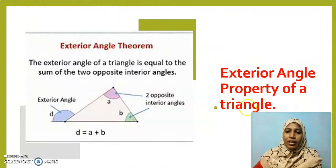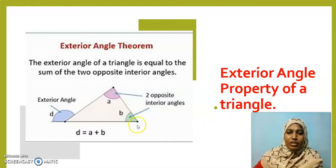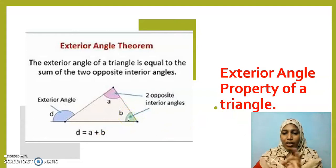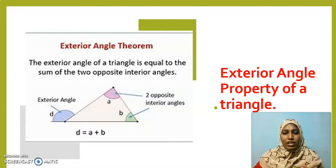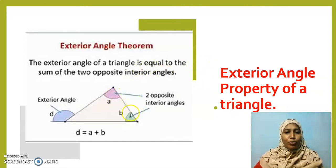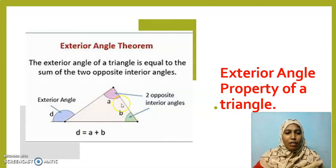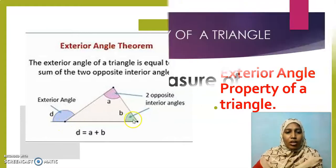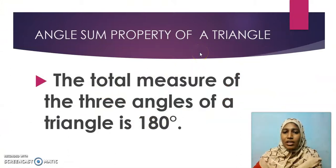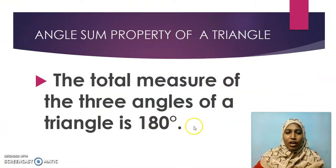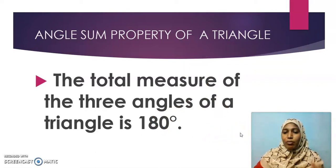After that, we learnt about the exterior angle property. We have 6 exterior angles — 3 in the clockwise direction and 3 in the anticlockwise direction, when the lines of the triangle are extended. One exterior angle is equal to the sum of the 2 opposite interior angles. Then we learnt about the angle sum property of a triangle: the total measure of all 3 angles of a triangle is 180 degrees. Based on these properties, we found the values of x and y.